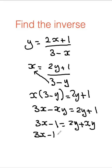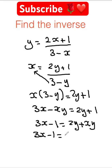3x minus 1 and factor out the y as the greatest common factor, and I'm going to get 2 plus x.